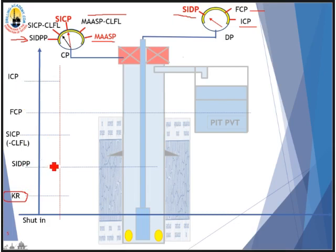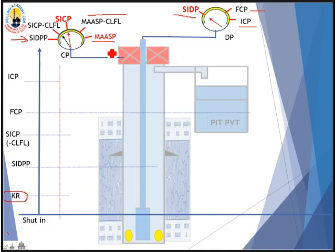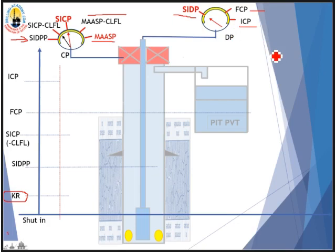One important note about lag time: the choke control acts on the annulus side of the well, so there is no lag time between choke control and the casing pressure gauge — every choke adjustment will almost instantly show on the casing pressure gauge. However, for the drillpipe pressure gauge, every choke adjustment will take a lag time of one second per one thousand feet traveling along the well path. So take the measured depth of the well in feet, double it, and divide by 1,000 to get the lag time for the drillpipe pressure gauge. Be patient with it.